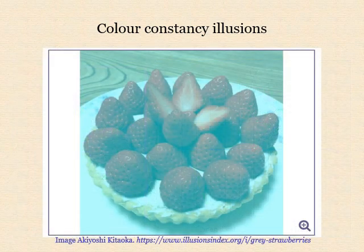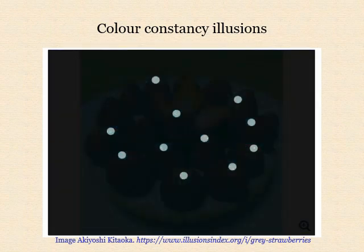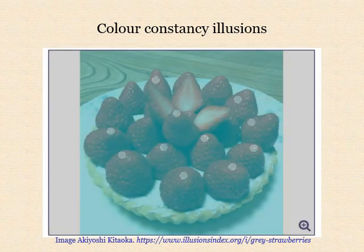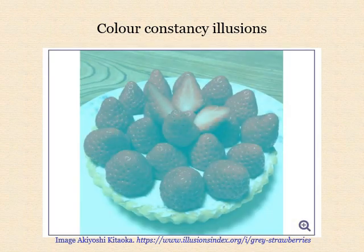Also in this category are Akiyoshi Kitaoka's strawberries, which appear red but are painted with a blue-green to grey digital paint. Again, global viewing favours perception of bright red virtual strawberries, while attentive viewing of a single area — especially in comparison with the white margins — may favour perception of a grey or greyish image colour.